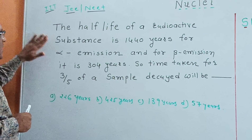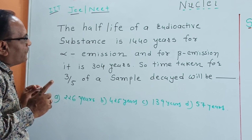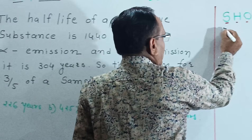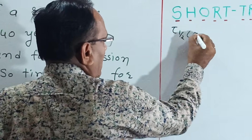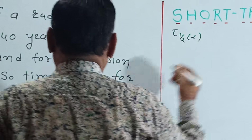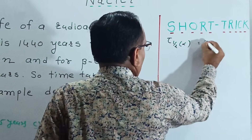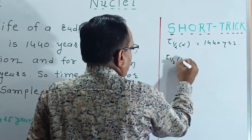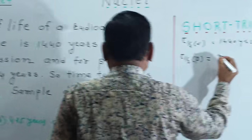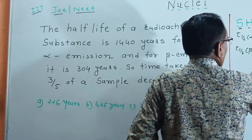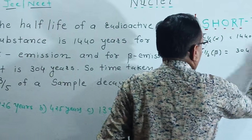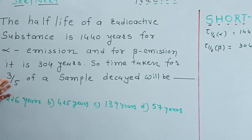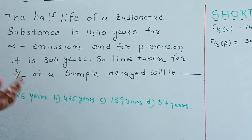So, the half-life for alpha emission is 1440 years. We consider tau-alpha equals 1440 years and for beta emission it is 304 years. The problem: time taken for 3/4 of the sample to decay will be what?